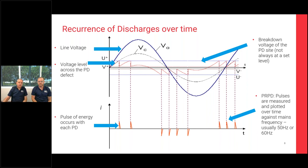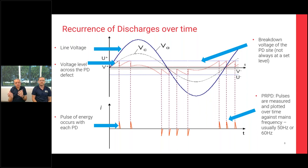When you see PD pulses from cavity-type discharge, they occur on the rising and falling edge of the sine wave — a certain number but not too many per cycle — consistent in position but slightly random in amplitude. Surface discharge tends to occur at the peaks of the voltage and be more frequent.